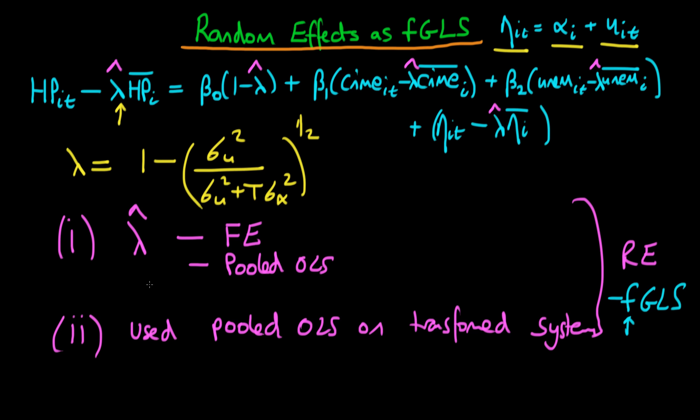So what are the assumptions which we require in order to derive some properties of this random effects estimator? The first assumption we require is that the covariance of this unobserved term alpha_i with any value of the independent variables, which I'm calling here x_it for any point in time t, must be equal to zero. Because remember, if it wasn't equal to zero, then we're going to run into issues of endogeneity, and what we should be doing is we should be using either first differences or fixed effects to remove this unobserved heterogeneity term.